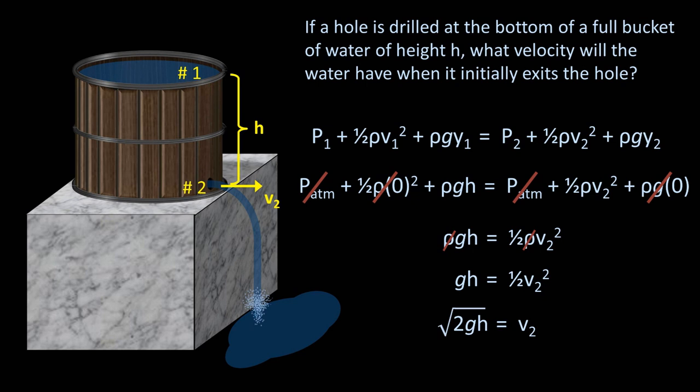Finally, and most interestingly, this is the same velocity that an object or fluid would have as it passed point 2 if dropped from an h and allowed to fall straight down under the influence of just gravity.